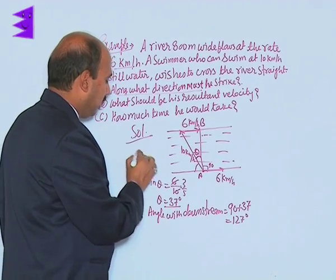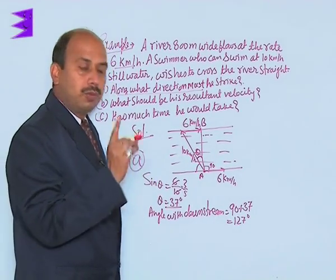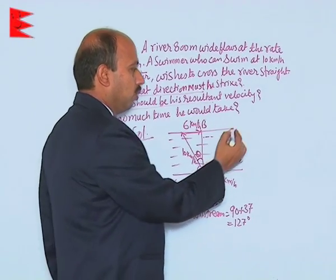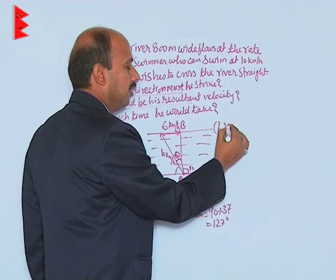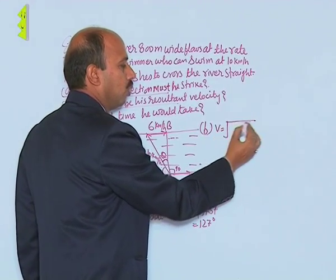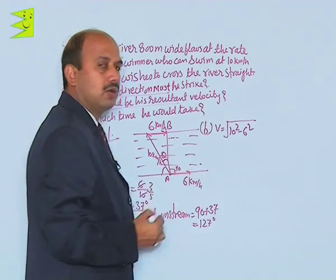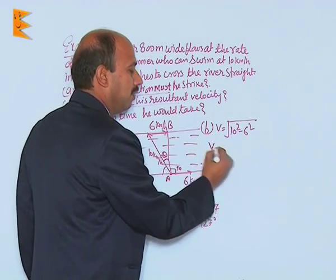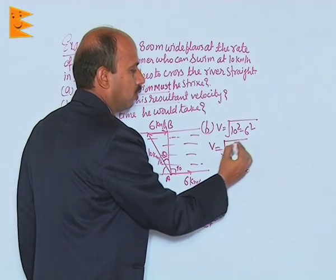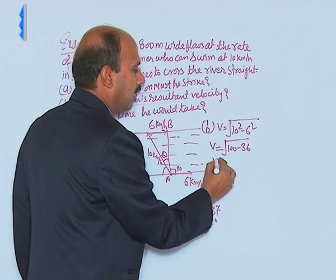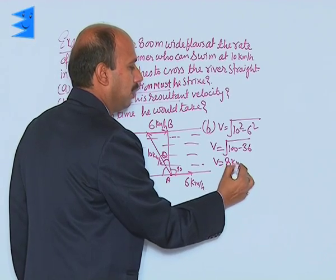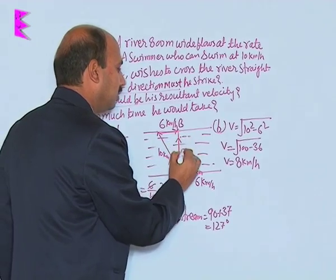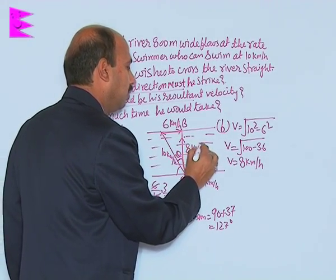Now after this part, now we can calculate part b, what should be his resultant velocity? So, we can write here in this b, v is equal to under root of 10 square minus 6 square. Already we have done this formula in application. So, that will be v is equal to under root of 100 minus 36 that will be here 8 kilometer per hour. So, the resultant velocity will be along this direction that is 8 kilometer per hour.